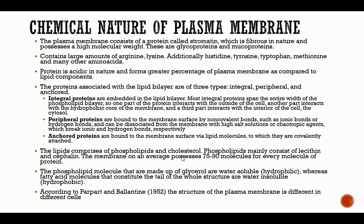According to Papat and Valentine, the structure of the plasma membrane differs in different cells. Despite the composition being similar, the structure differs from cell to cell. For example, the membrane structure of cells in the meristematic region differs from those in the leaf organ region, the stem organ region, or the root tissue regions.